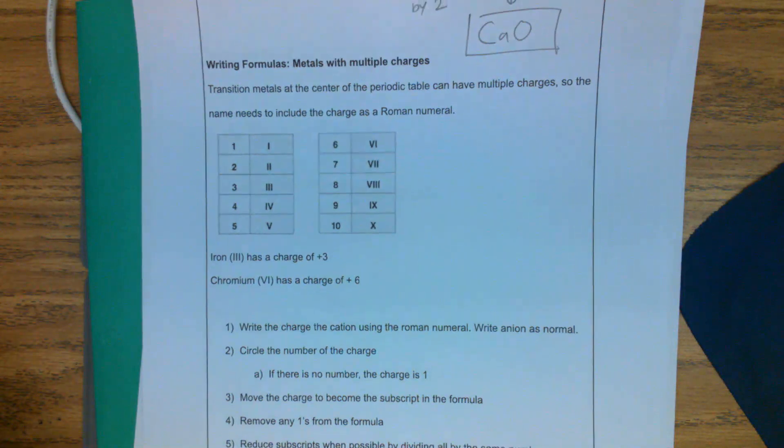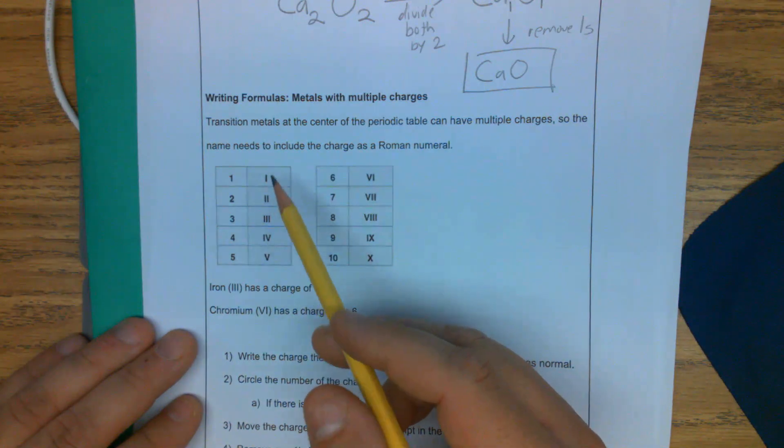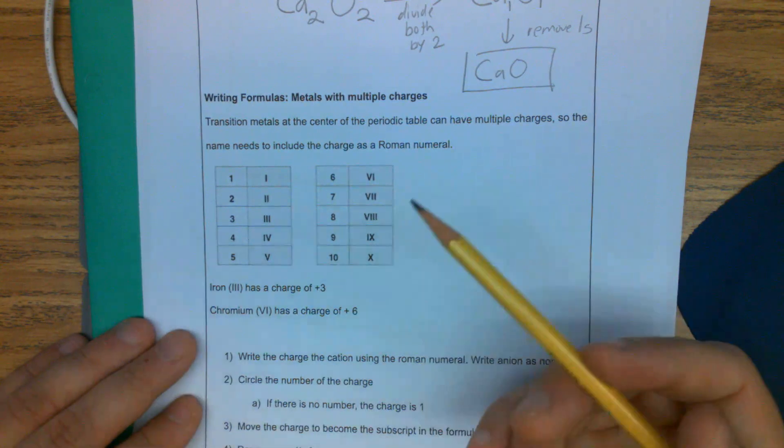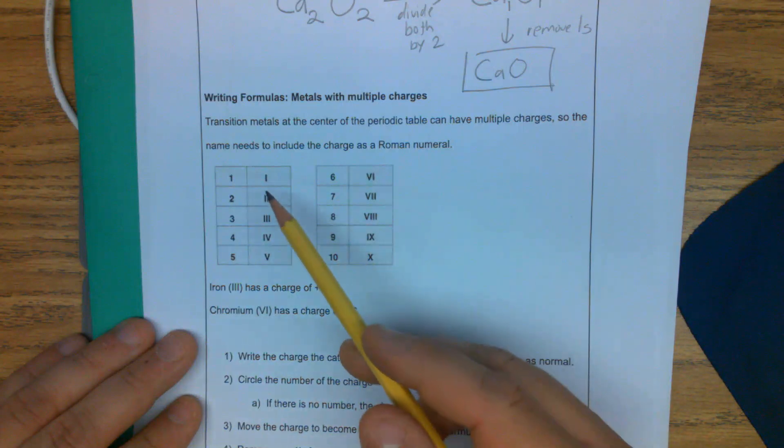Okay, so what we do instead is we have the numbers given to us as Roman numerals. So these symbols, these letters represent numbers. This is an old way of showing before we had system of numbers, we use letters. So this is the key that we're going to use.